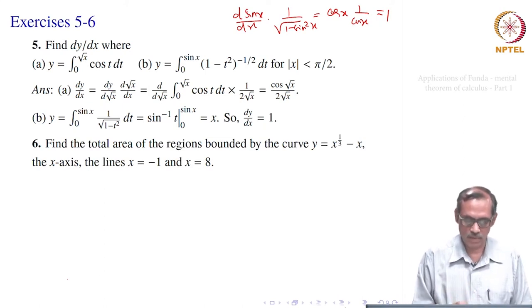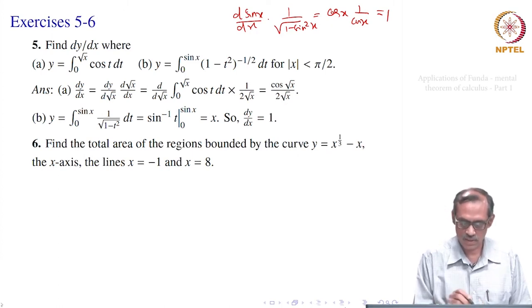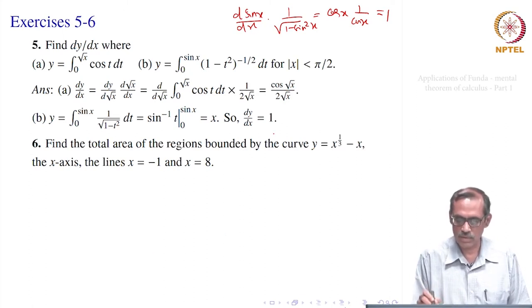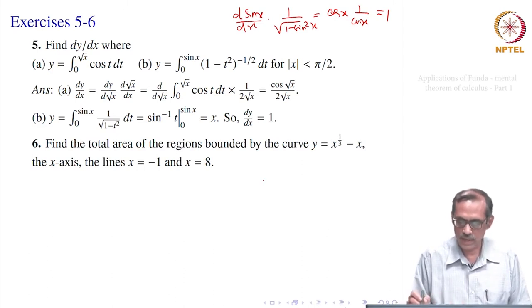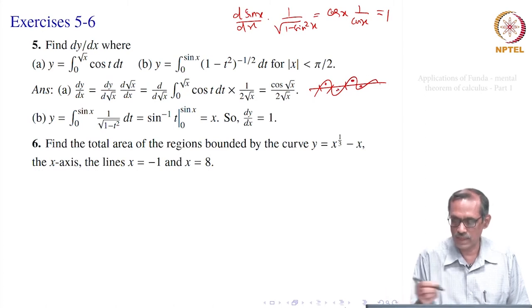So, let us go to the sixth problem. We want to find the total area of the regions bounded by the curve y equal to x to the power 1 by 3 minus x, the x-axis, and the lines x equal to minus 1 and x equal to 8. It is written 'regions', so there might be multiple regions. We want to find the total area; there can be multiple regions or maybe only one region. Conceptually, there can be many points where it crosses the x-axis; then you have to find those areas and add them up. That is what is being asked.